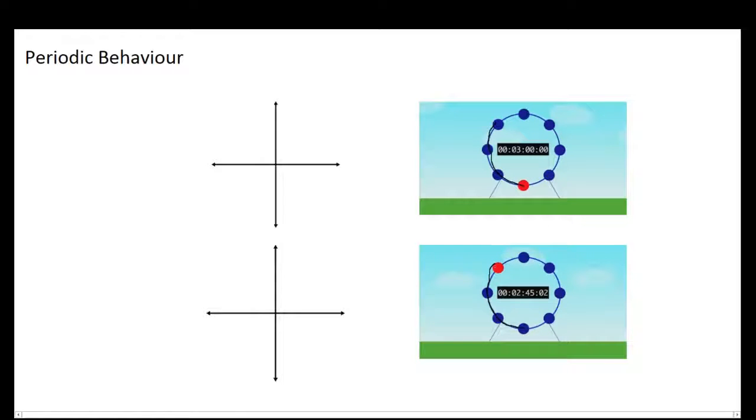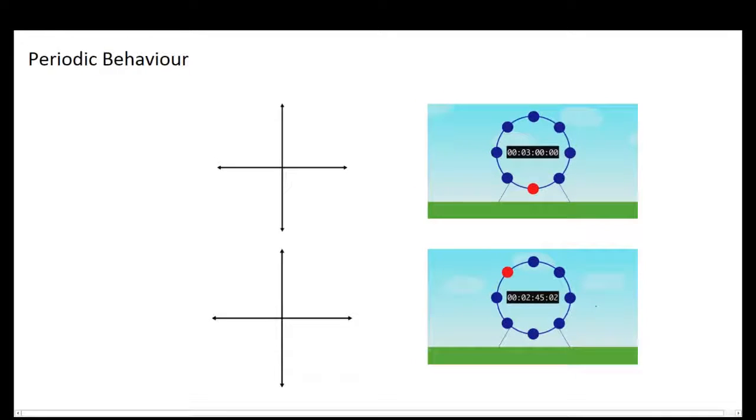So you can simply continue counting, you can say twenty, twenty-five, thirty, thirty-five, forty. You'll see every forty seconds there will be a revolution around this wheel.